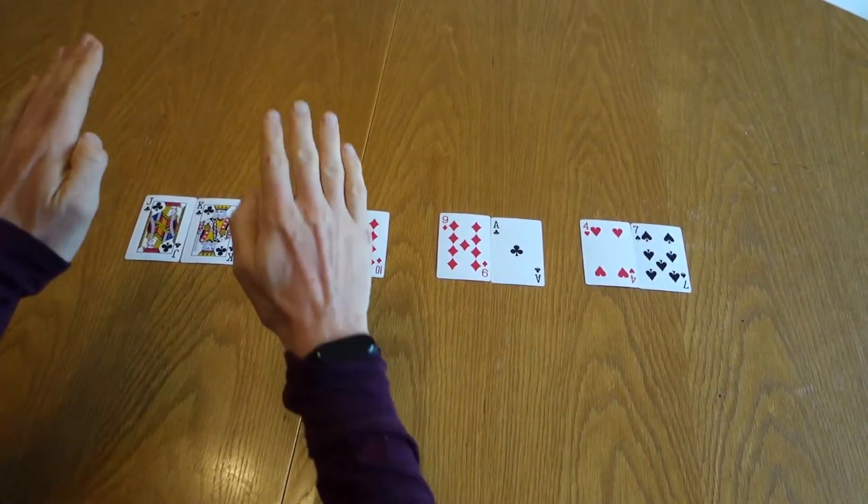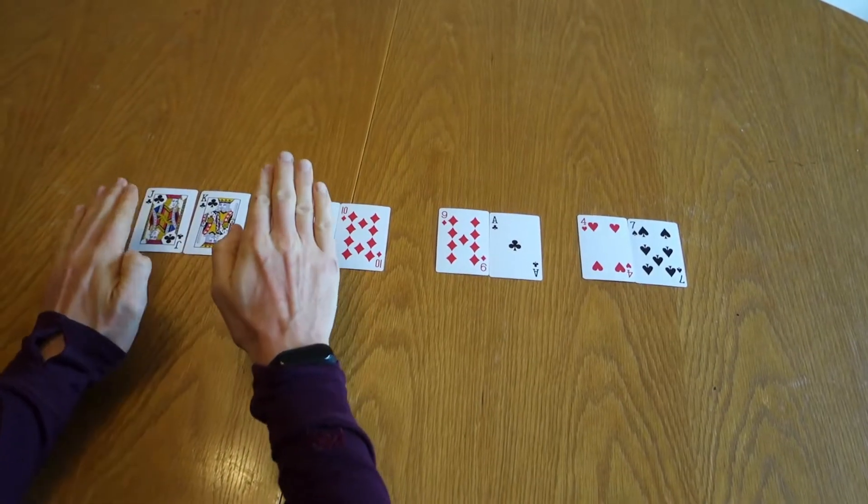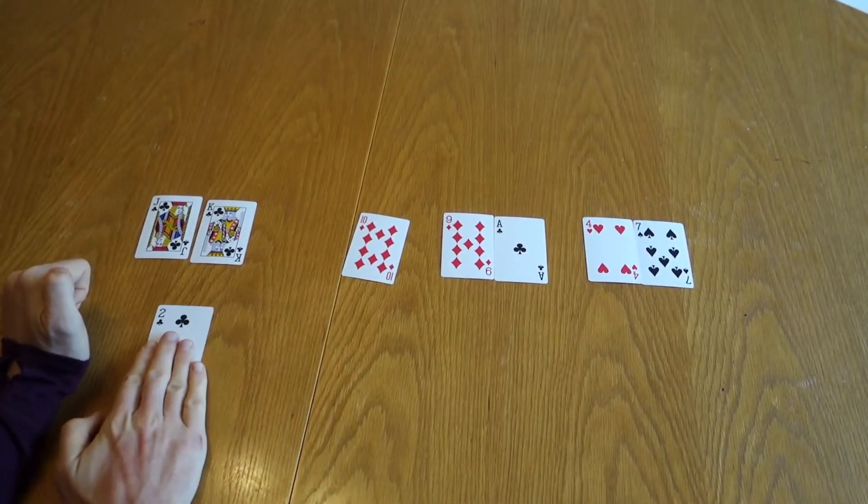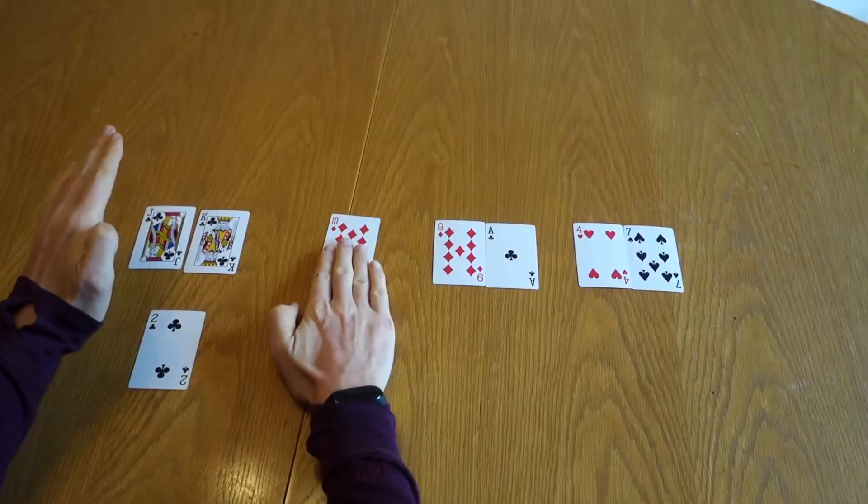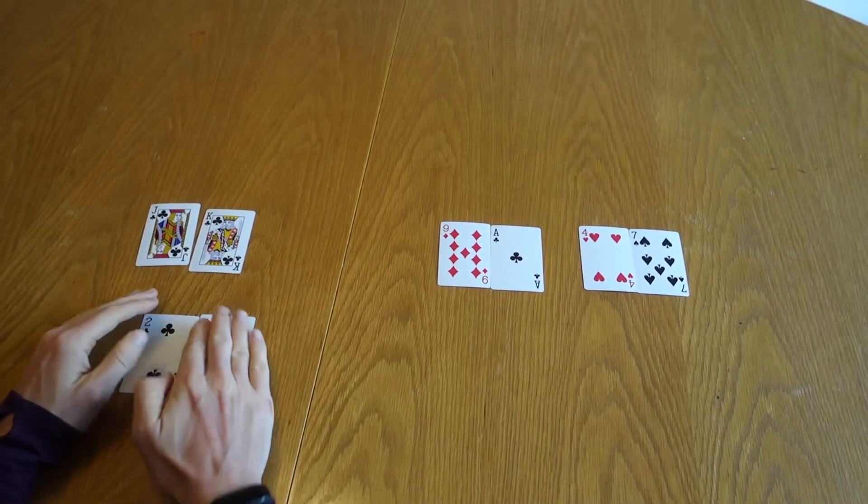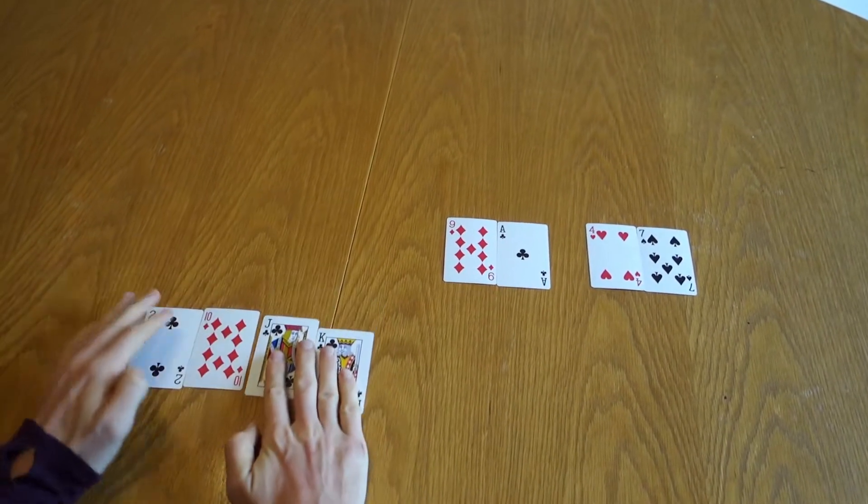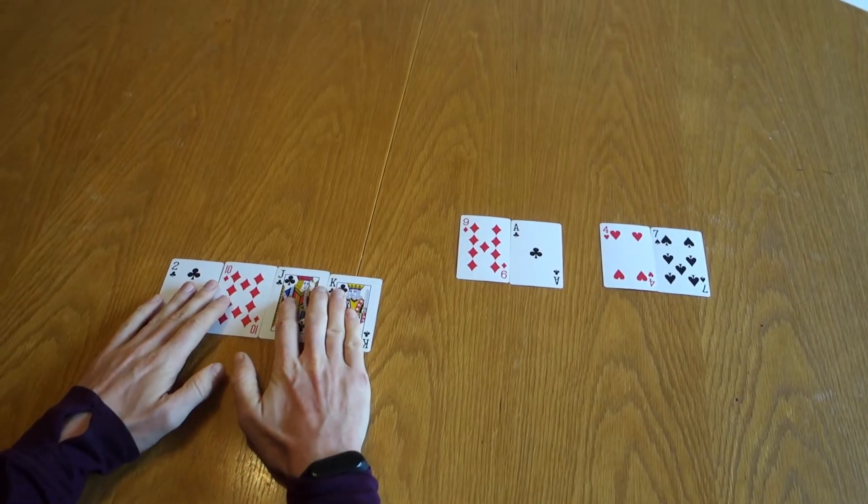All are done. So now we merge these two. We compare two and Jack. Two goes there. We compare ten and Jack. Ten is less, and then those two are already in order. So those four are now sorted.